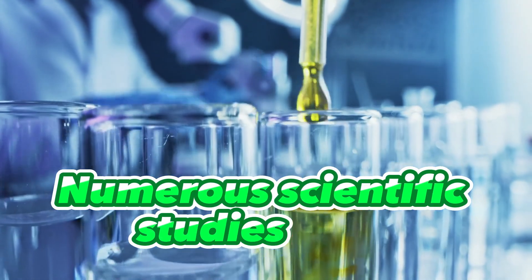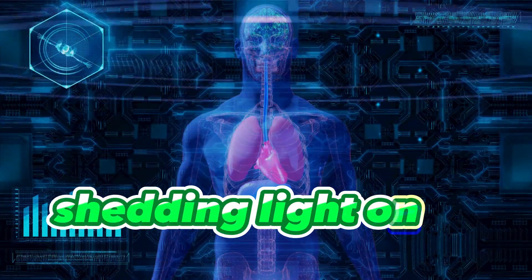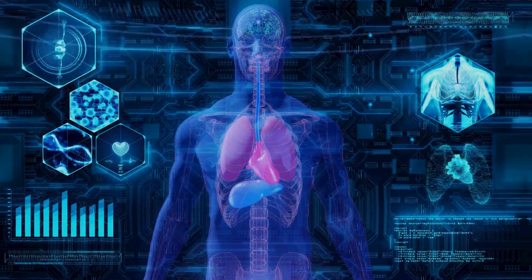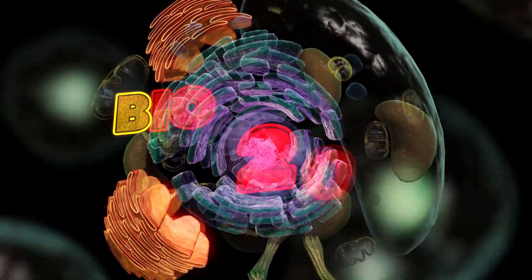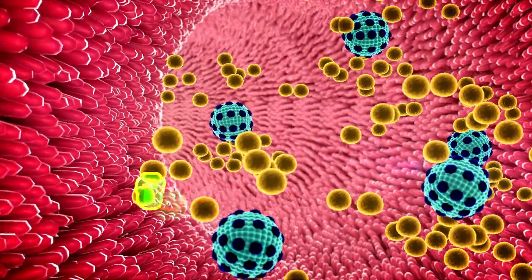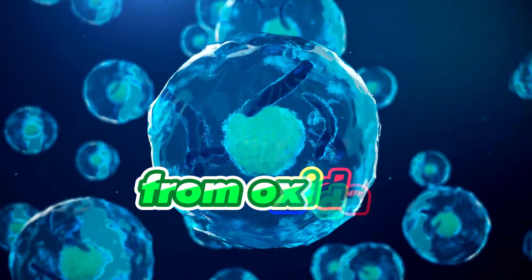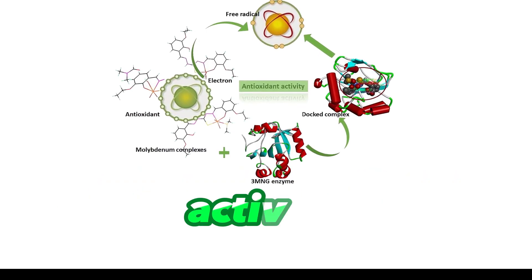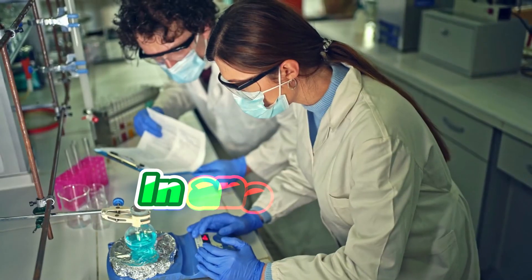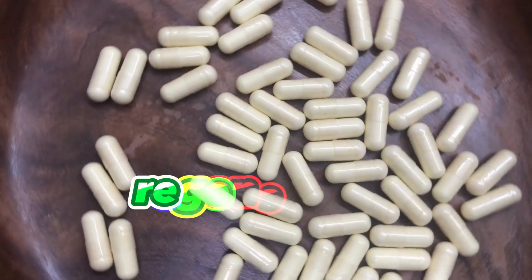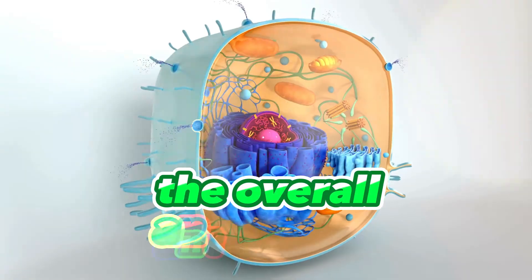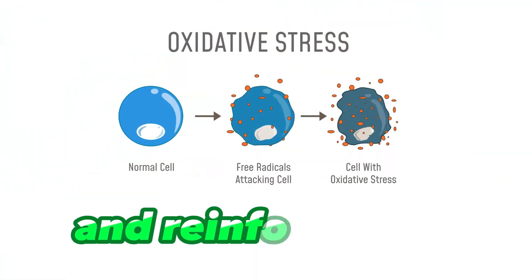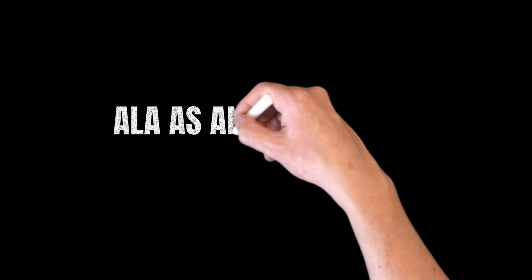Numerous scientific studies have delved into the molecular properties of ALA. A study published in the journal Biochemistry in 2017 investigated ALA's ability to scavenge free radicals, finding that ALA's thiol group played a crucial role in neutralizing free radicals effectively. In another study published in Redox Biology in 2019, researchers explored ALA's unique ability to regenerate other antioxidants such as vitamin C and vitamin E, enhancing the overall antioxidant defense system of our cells.